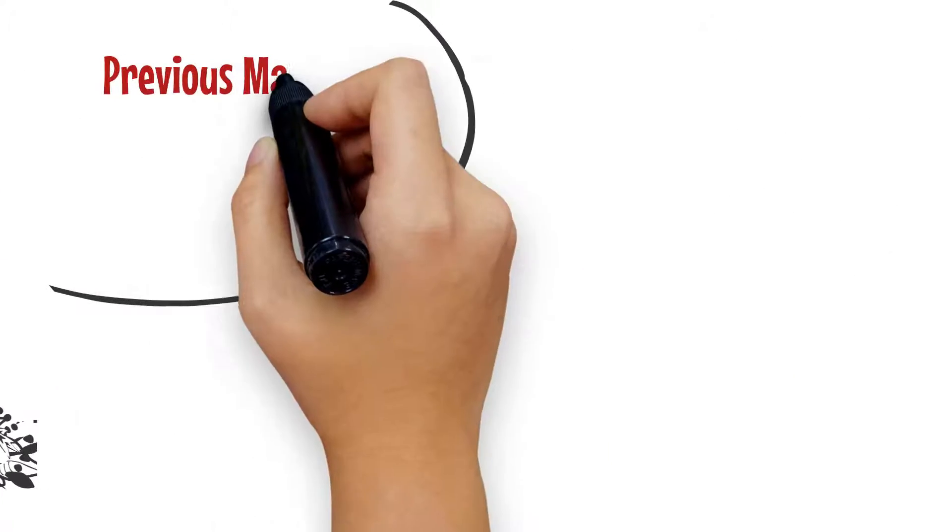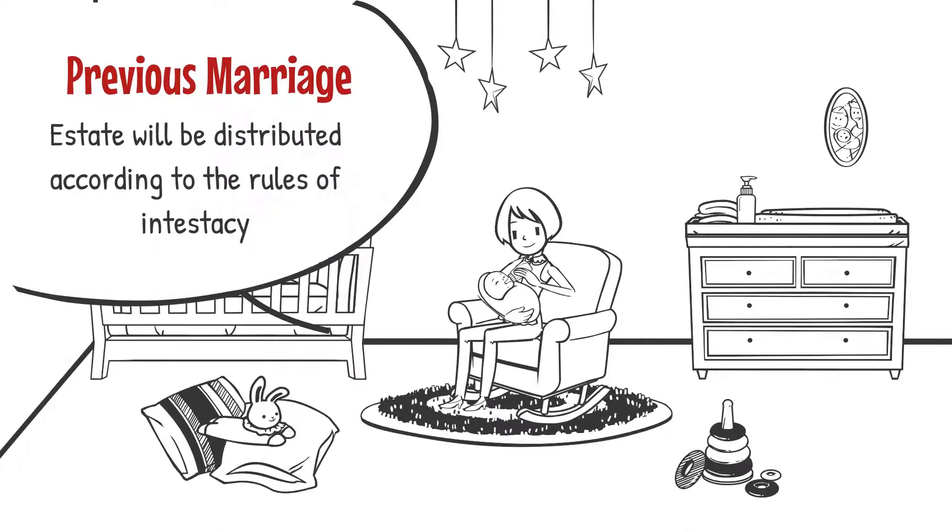For example, if someone makes a will leaving money to children from their first marriage, but later they remarry and fail to make a new will before they die, their estate will be distributed according to the rules of intestacy.